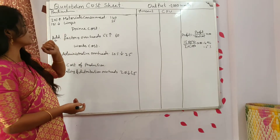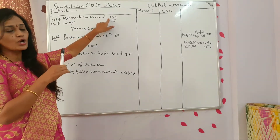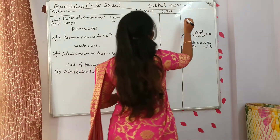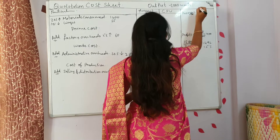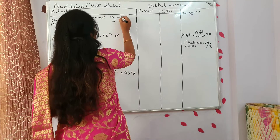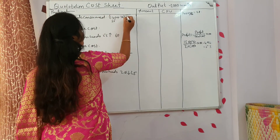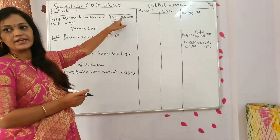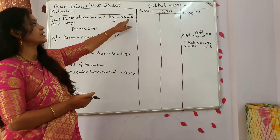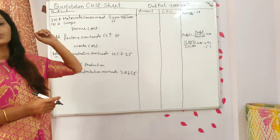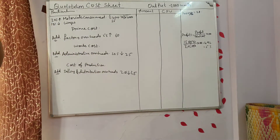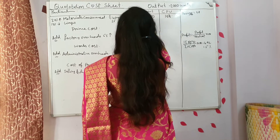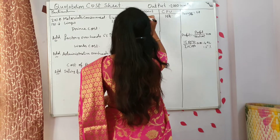By taking all these details under consideration you have to find out costs for 2000 units. Now let's start with materials consumed. The actual cost per unit calculated in the cost sheet was 140. It should be increased by 20% — that means 140 plus 140 into 20 by 100 equals 28 rupees. So 140 plus 28 equals 168, into 2000 units — you will get 3,36,000.